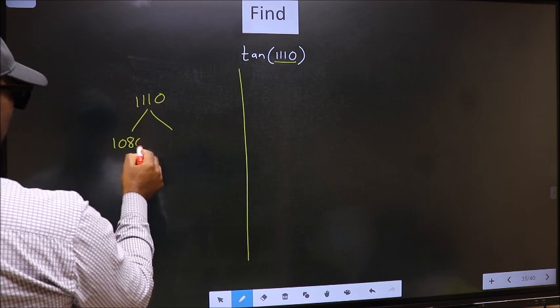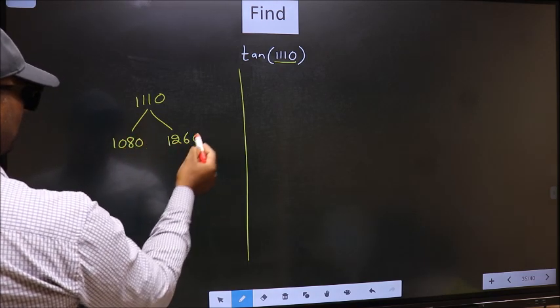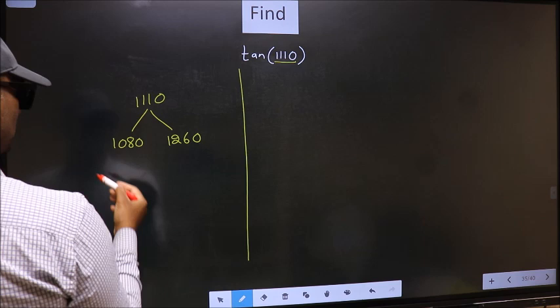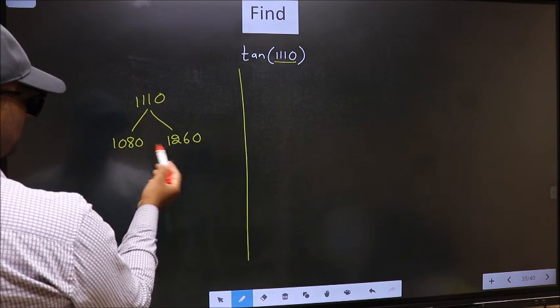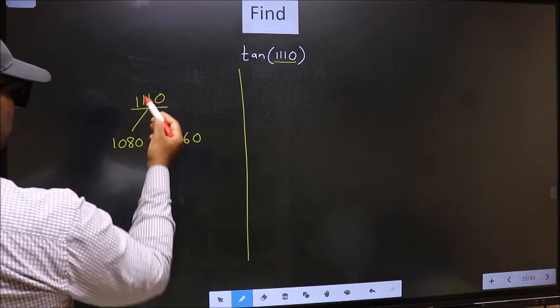1080 and 1260. This is 180 times 6 and this is 180 times 7. Between these two numbers, 1110 lies.